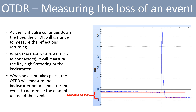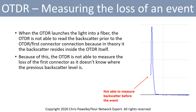So how does an OTDR measure the loss of an event? As the light pulse continues down the fiber, the OTDR will continue to measure the reflections returning back to its detectors. When there are no events such as connectors, it will measure the Rayleigh scattering or the backscatter. When an event takes place, the OTDR will measure the backscatter before and after the event to determine the amount of loss. When the OTDR launches the light into a fiber, it is not able to read the backscatter prior to the OTDR's first connector connection, because in theory the backscatter resides inside the OTDR itself. Because of this, the OTDR is not able to measure the loss of the first connector as it doesn't know where the previous backscatter level is.